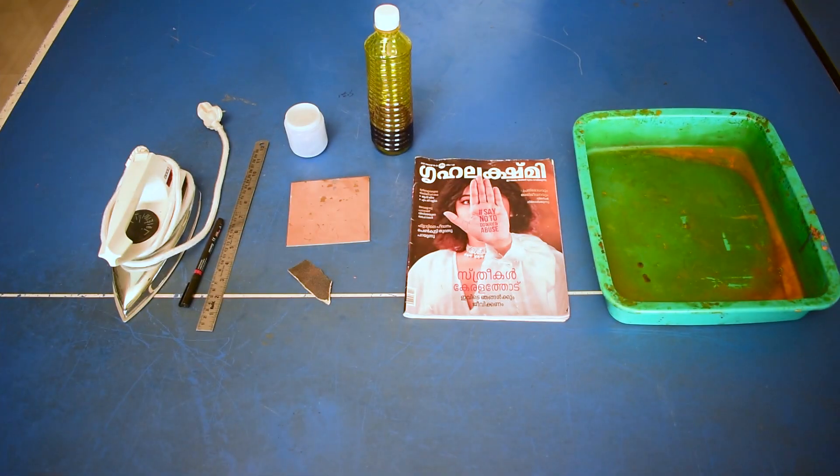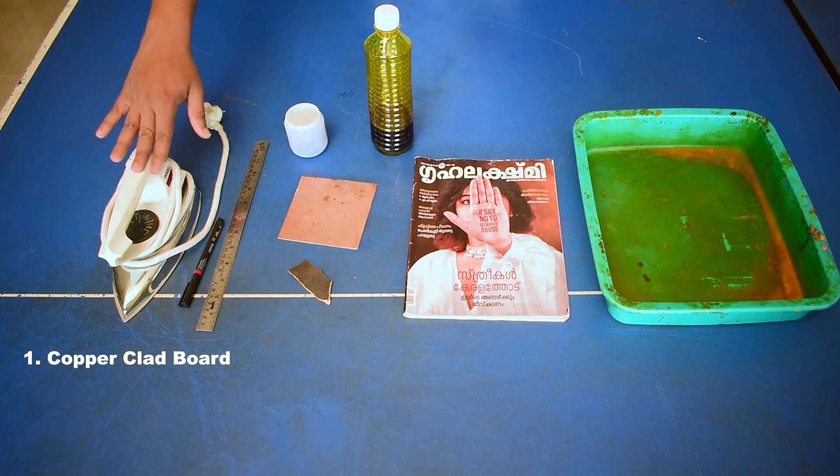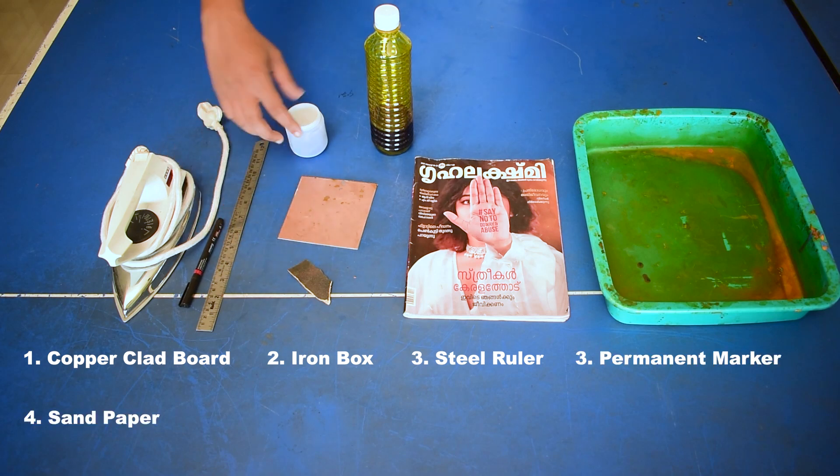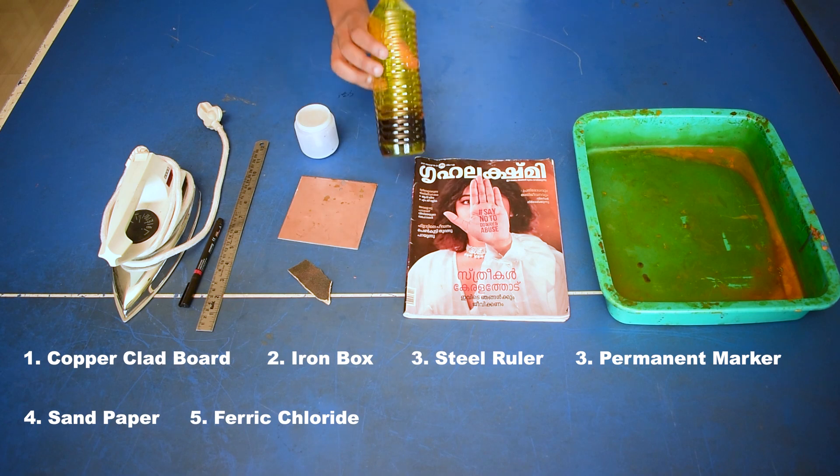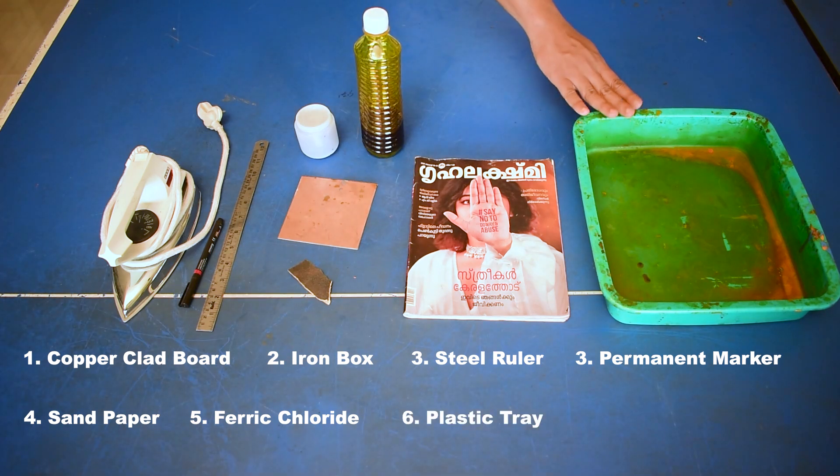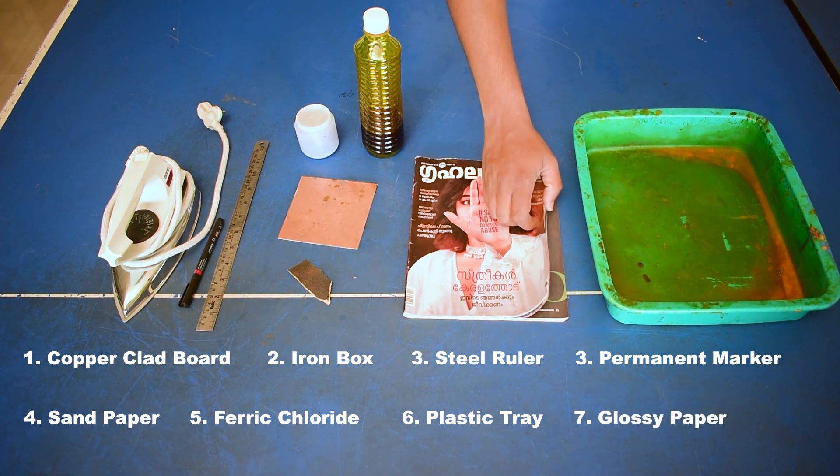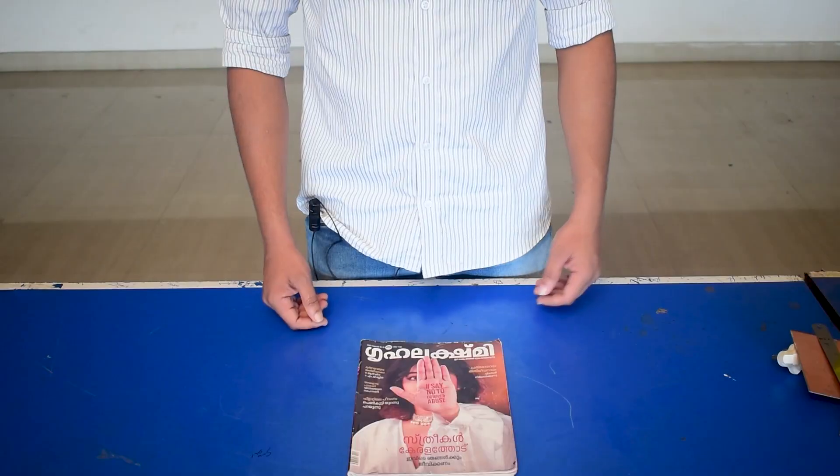Let's start the process. The materials required for making this process are copper cladboard, normal iron box, steel roller, permanent marker, a piece of sandpaper, ferric chloride - you can use both solid or liquid type, a plastic tray. Do not use metal because it may cause chemical reaction during the process, and a glossy paper. You can use a magazine paper if it has glossy coating.